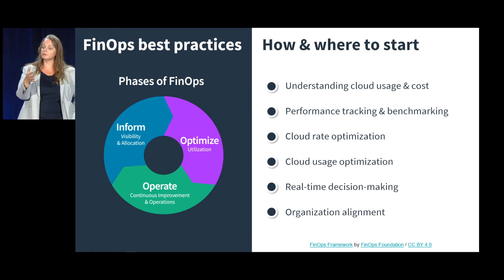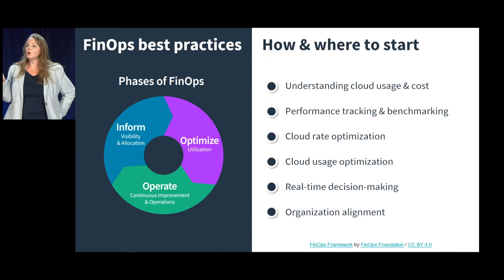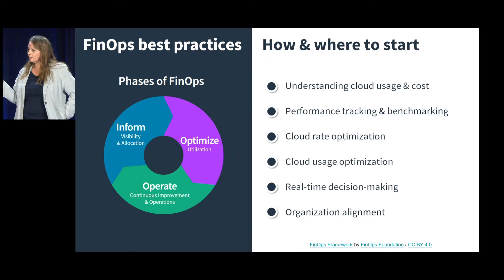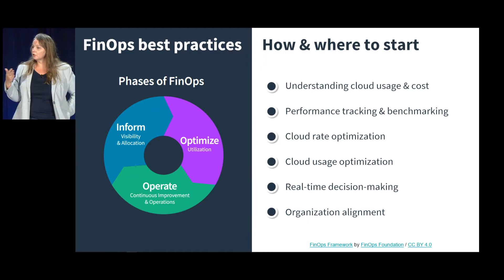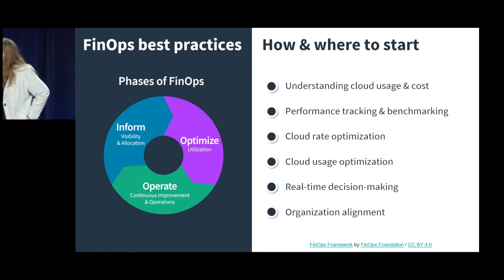Then you go into the Operate phase. Operate is where you take the optimization opportunity and actually execute on it, using data-driven results to measure whether or not you are achieving savings. Then you start this flywheel all over again. Operate is also where you implement financial controls, policies, and processes that need to be put into place or renegotiated based on the variable nature of the cloud.